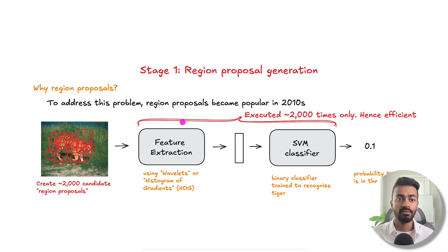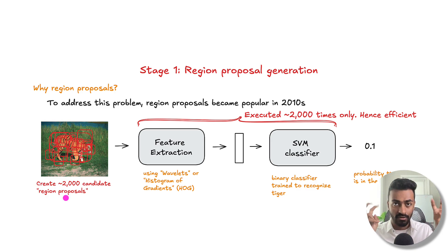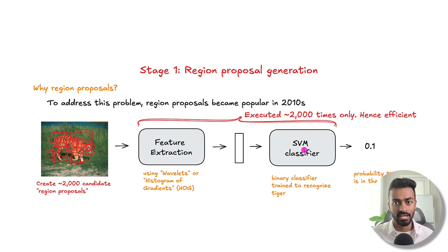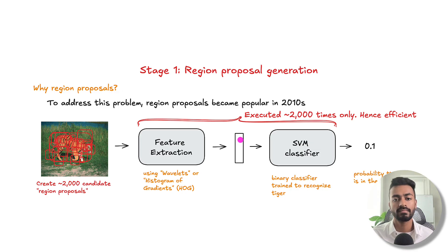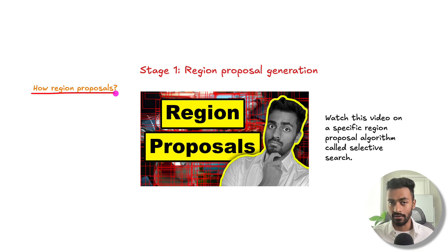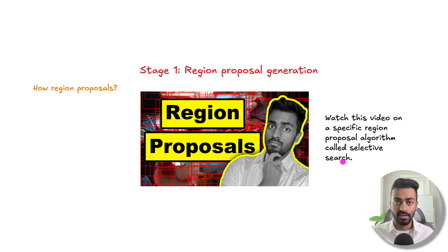To deal with this, region proposals became popular in the 2010s. For the input image, we create roughly 2000 candidate region proposals — places where an object may be present — and perform feature extraction and classification only 2000 times. This scaled well with the rise of the internet, which brought higher quality images and much larger datasets. For how region proposals are created, I defer to a previous video on selective search, but for now just know what they are and why they exist.